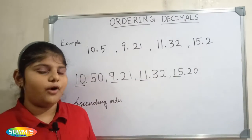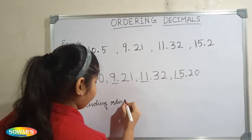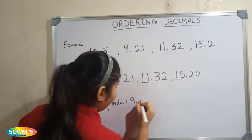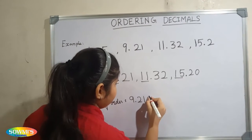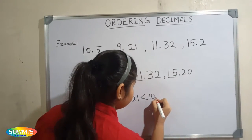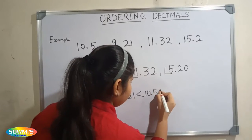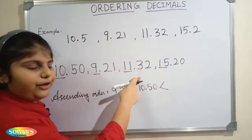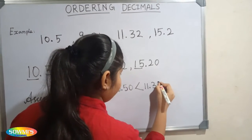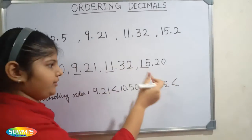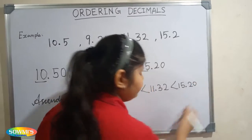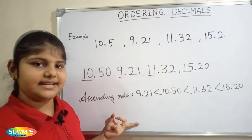Ascending order means smaller number to larger number. Here the smallest number is 9, so 9.21 comes first, next 10.50, next 11.32, and then 15.20. Next we will arrange in descending order.